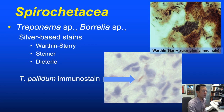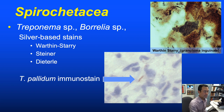Historically, treponemal infections were identified using silver-based stains, but these have had a reputation for being difficult to perform and interpret. This stain is also used for granuloma inguinale, showing Donovan bodies containing Klebsiella granulomatis. We're mostly seeing syphilis these days, so we predominantly use the Treponema pallidum immunostain.